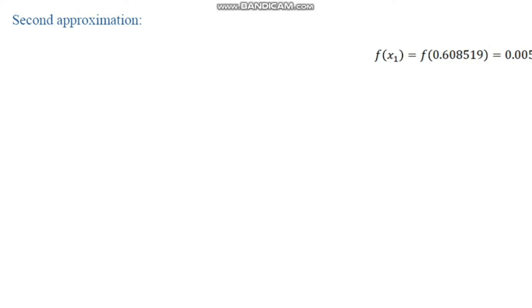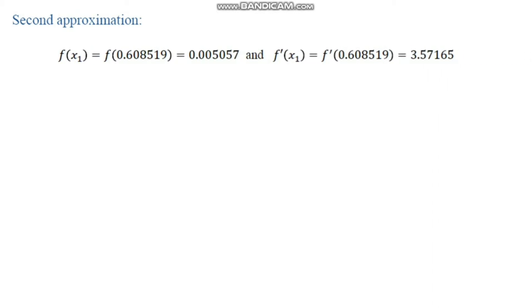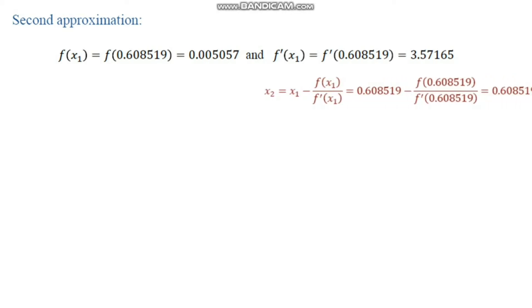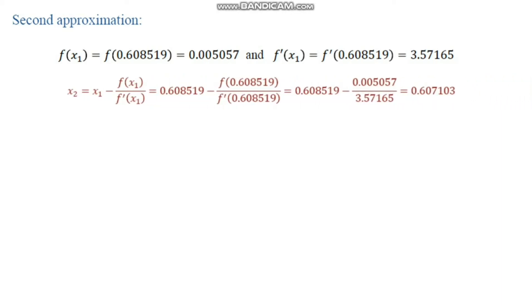For the second approximation, we compute f(x₁) and f'(x₁), substitute into the Newton-Raphson formula, and obtain x₂ = 0.607103.